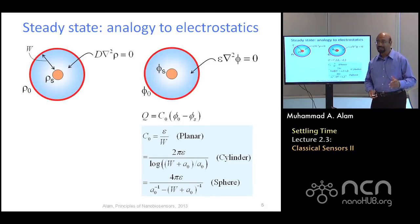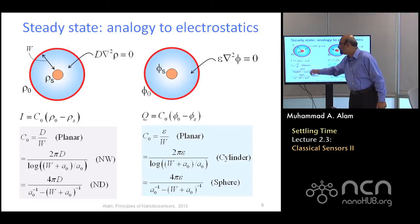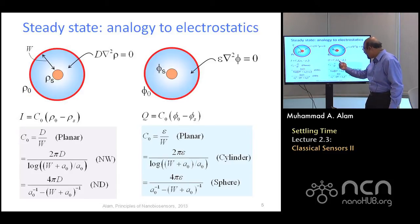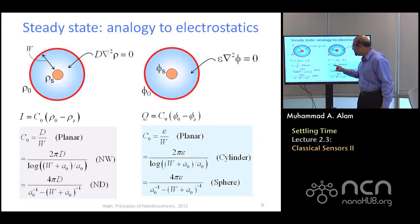And if that is the case, then I can immediately write that the current flux into the system is given by, quote, unquote, a diffusion capacitance, rho naught minus rho s in analogy of phi naught minus phi s. And the diffusion equivalent capacitance, everywhere you have epsilon replaced with D. And then you are done.